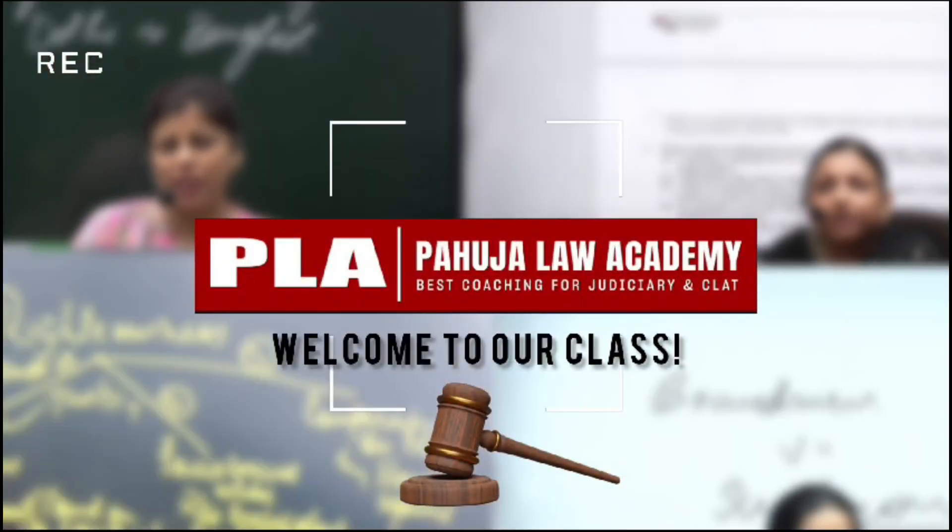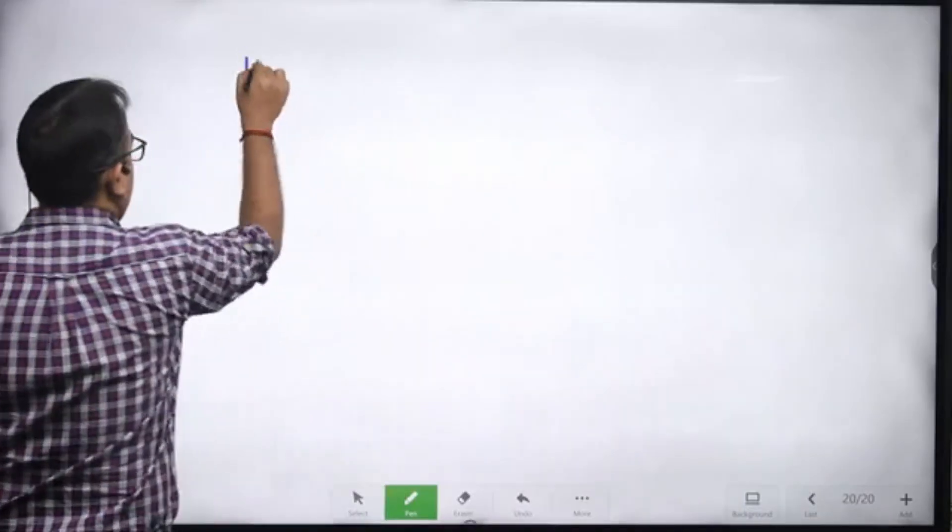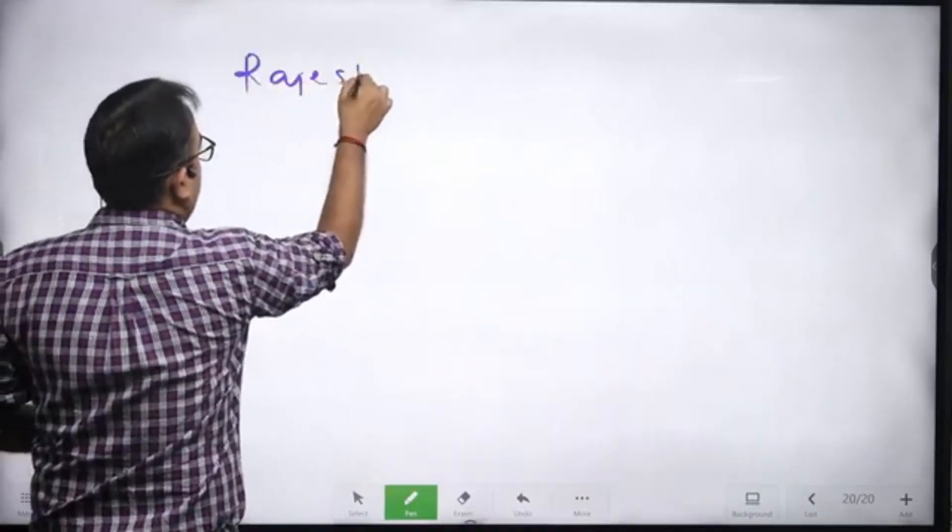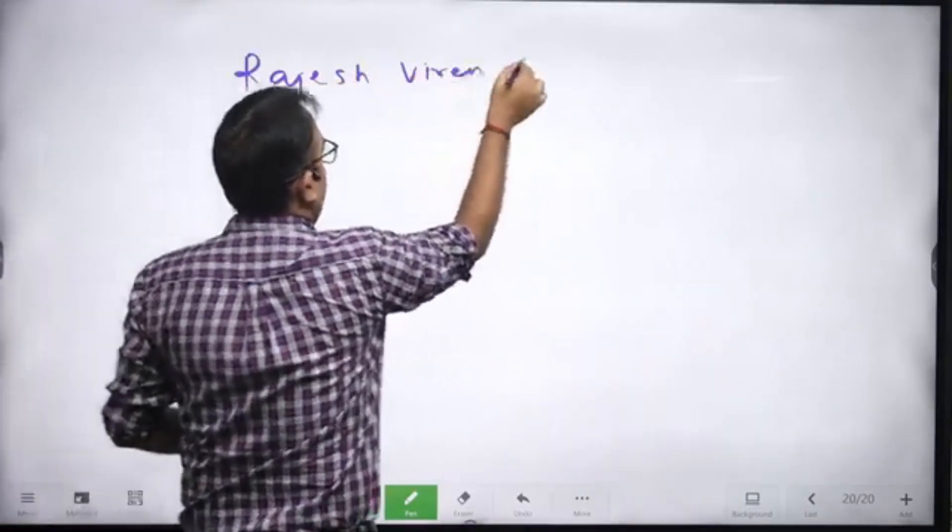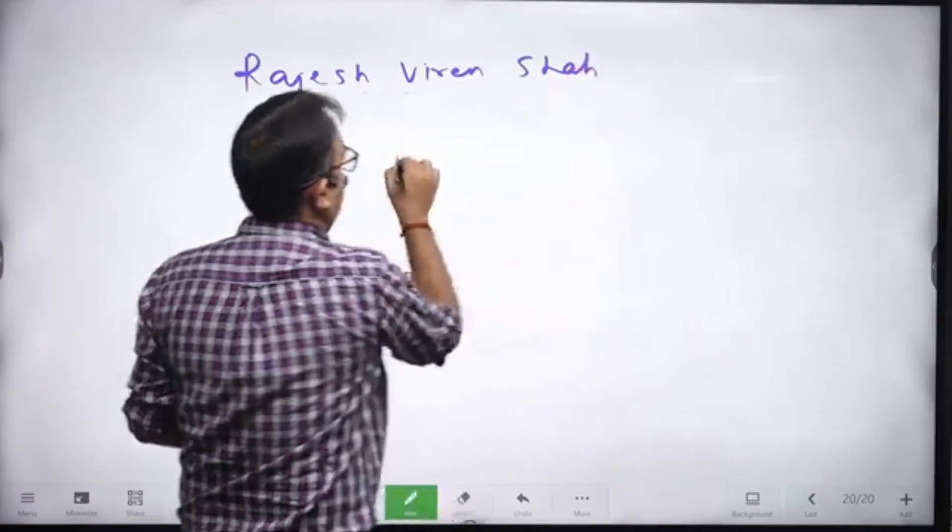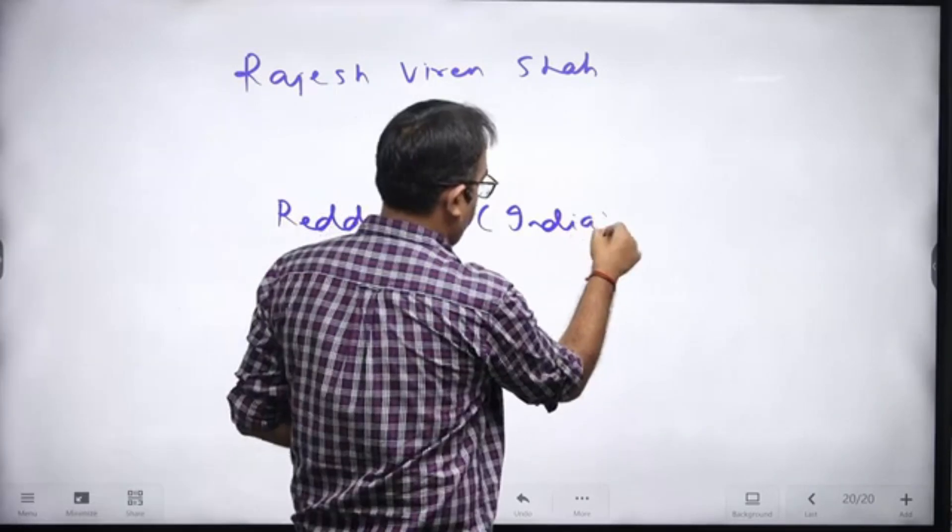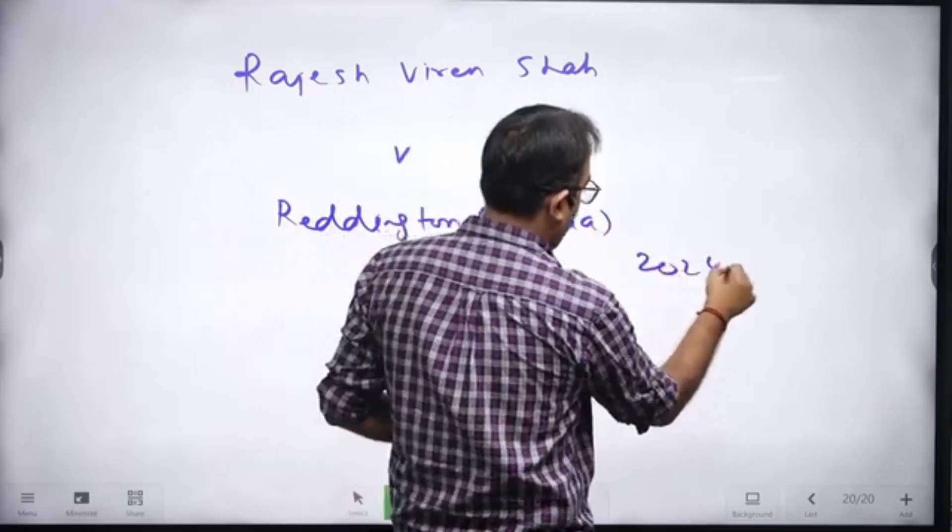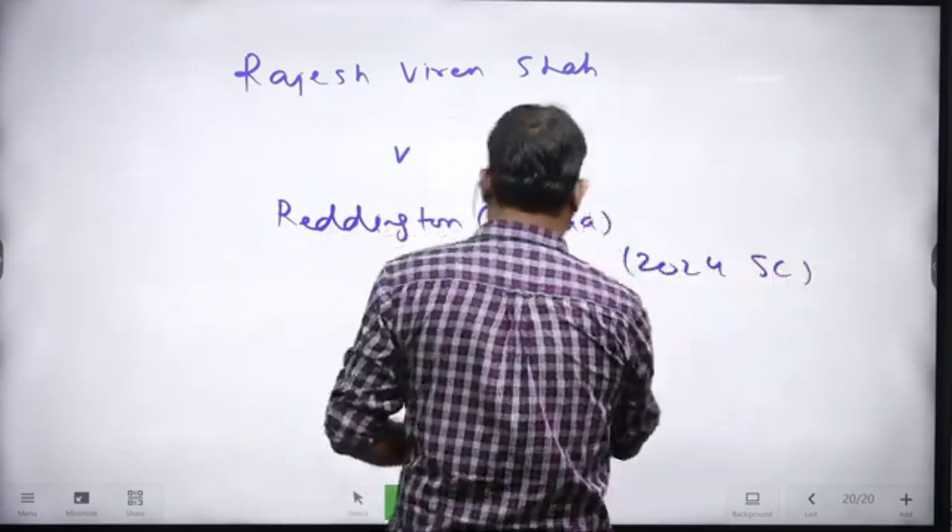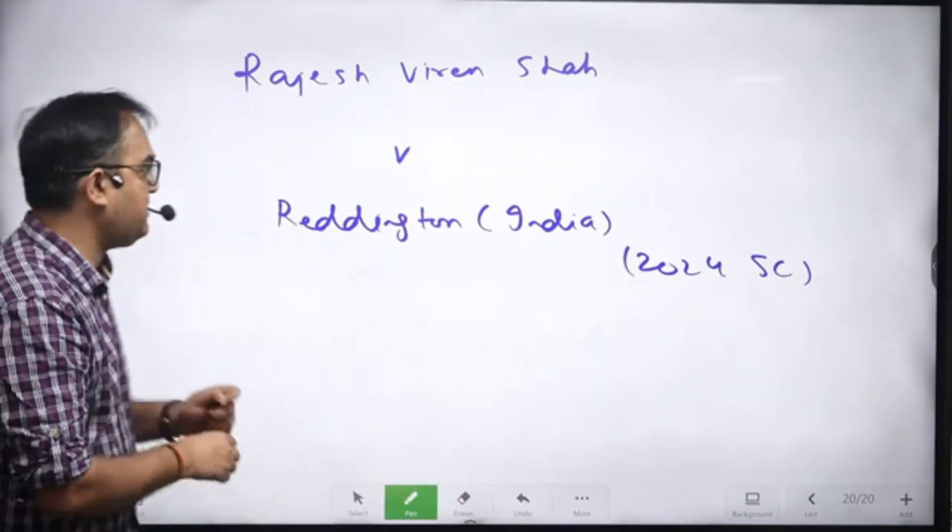Let me write Rajesh Viren Shah vs. Reddington, India. This is the case of 2024 Supreme Court. This is our section 141.